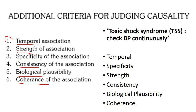While these individual headings can be understood easily, we may miss some when writing in exams. For this we have the mnemonic 'Toxic Shock Syndrome Check BP Continuously': T for temporal association, S for specificity, one more S for strength of association, C (check) for consistency, BP for biological plausibility, and C (continuously) for coherence.